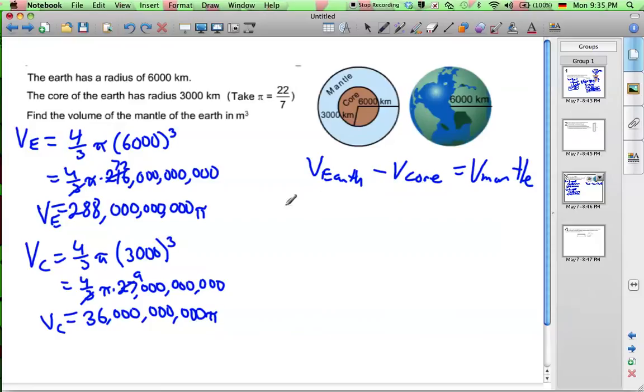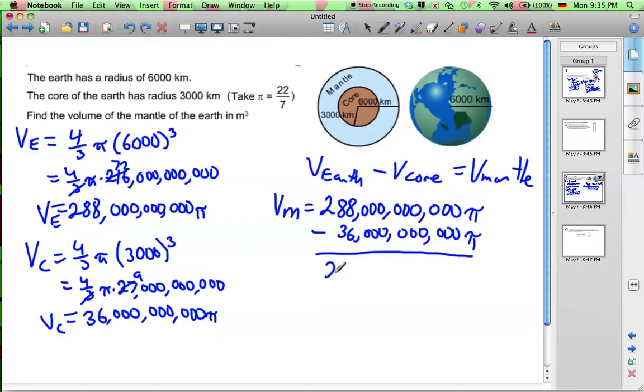So now we can do our subtraction here. So the volume of the mantle is going to be equal to the volume of the earth subtract the volume of the core, which is 288 billion pi subtract 36 billion pi. That gives us 252 billion pi. And our units were kilometers, so this is going to be kilometers cubed, cubic kilometers.